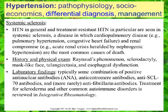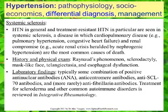As far as laboratory findings, typically some combination of positive anti-nuclear antibodies, anti-centromere antibodies, anti-SCL-70 antibodies, and more rarely anti-fibrillarin antibodies are found. Treatment for scleroderma and other common autoimmune disorders is covered in the book Integrative Rheumatology.